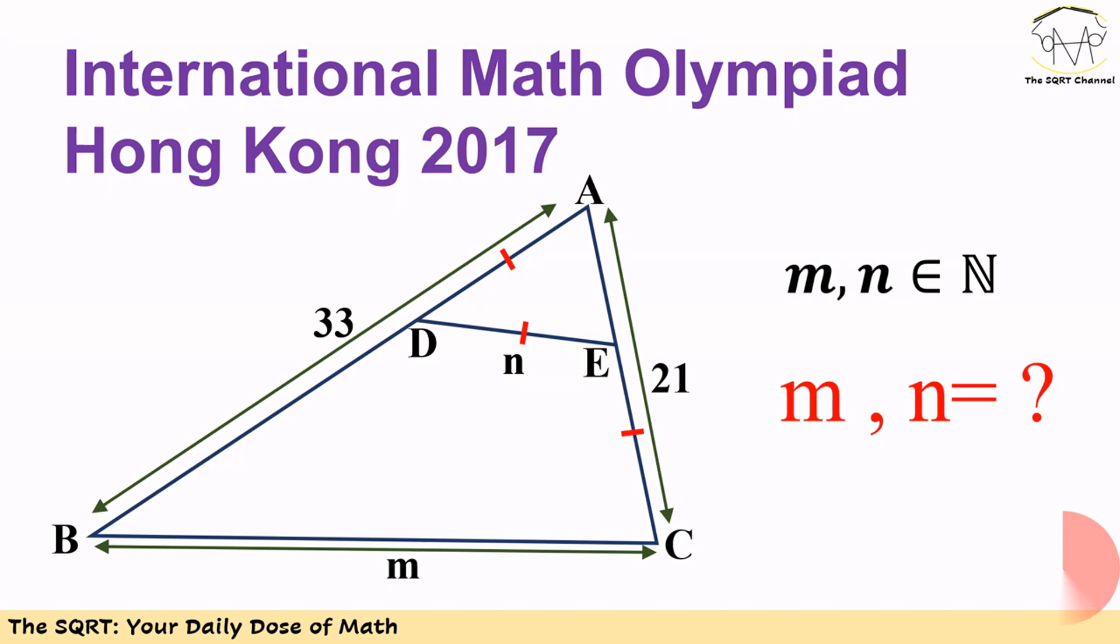In addition to these, we know AD is equal to DE is equal to EC, and we use N to represent their sizes. We want to find M and N, and we know M and N are integers. Before moving to the solution, make sure that you pause the video to think about the problem.